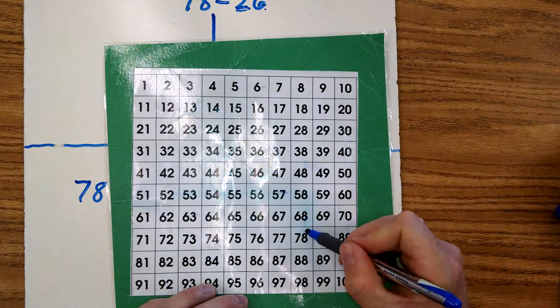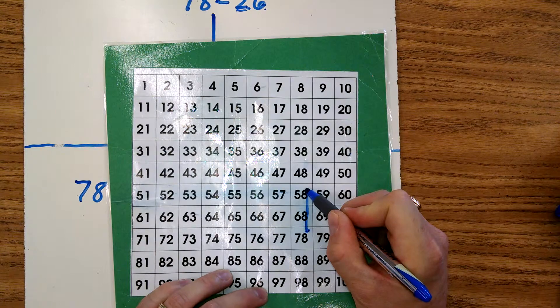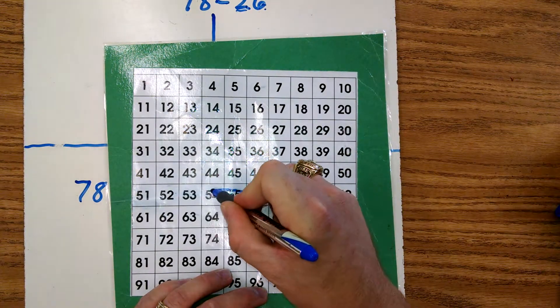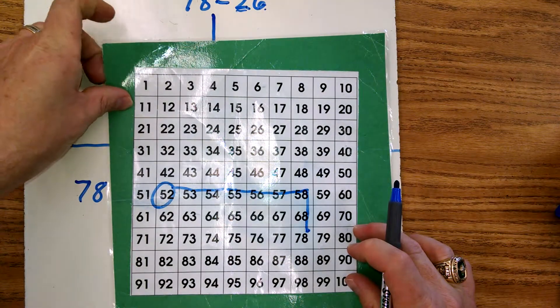Starting at 78, we're going to go back two tens. And we're going to go back six ones. One, two, three, four, five, six. And that's as easy as it is for subtracting using a hundreds chart.